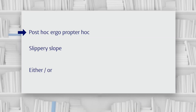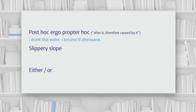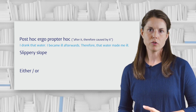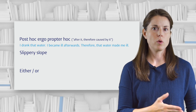Post hoc ergo propter hoc. This is Latin and it means 'after it, therefore caused by it.' This fallacy is when somebody says that because B happened after A, A caused B. An example would be: I drank that water, I became ill afterwards, therefore the water made me ill. The argument is that because I got ill after drinking the water, the water must have caused me to become ill. But actually there could be other causes — just because one thing happened before the other doesn't necessarily mean one caused the other.